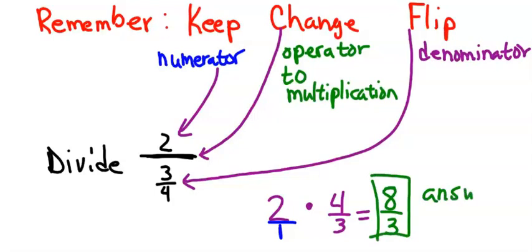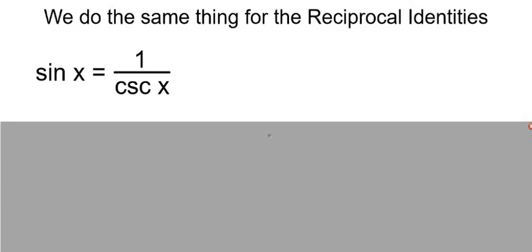So with us trying to figure out our identities, let's look at the keep, change, flip portion to help us figure out the reciprocal identities. We're going to use the same thing we just did with dividing fractions — all that stuff with opposite over adjacent, hypotenuse, and everything we wrote down in the last video — to tell us what our reciprocal identities are.